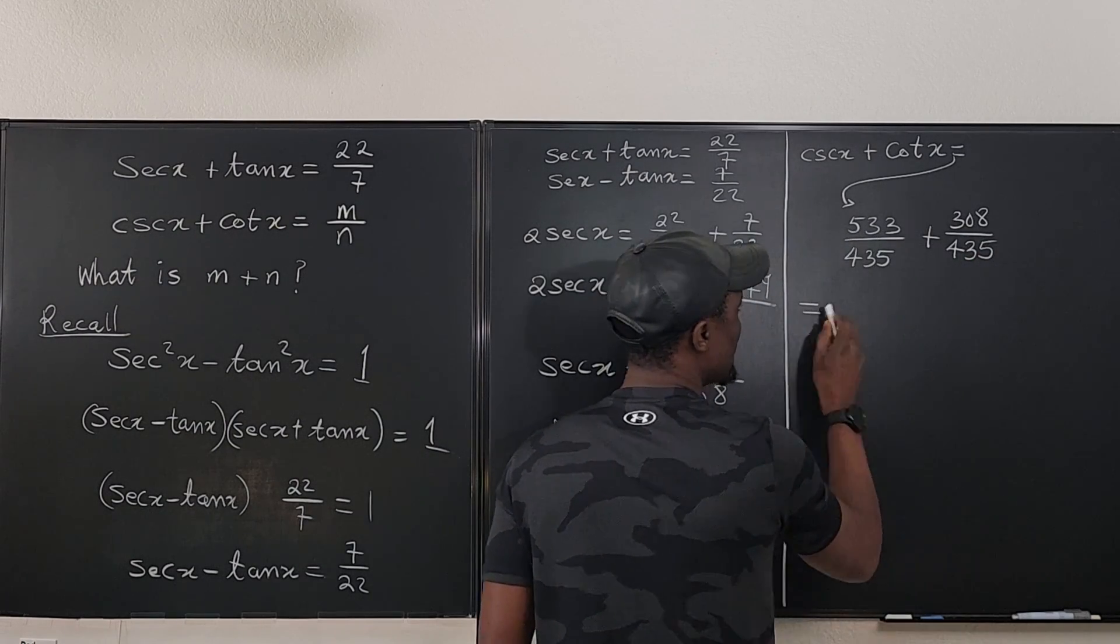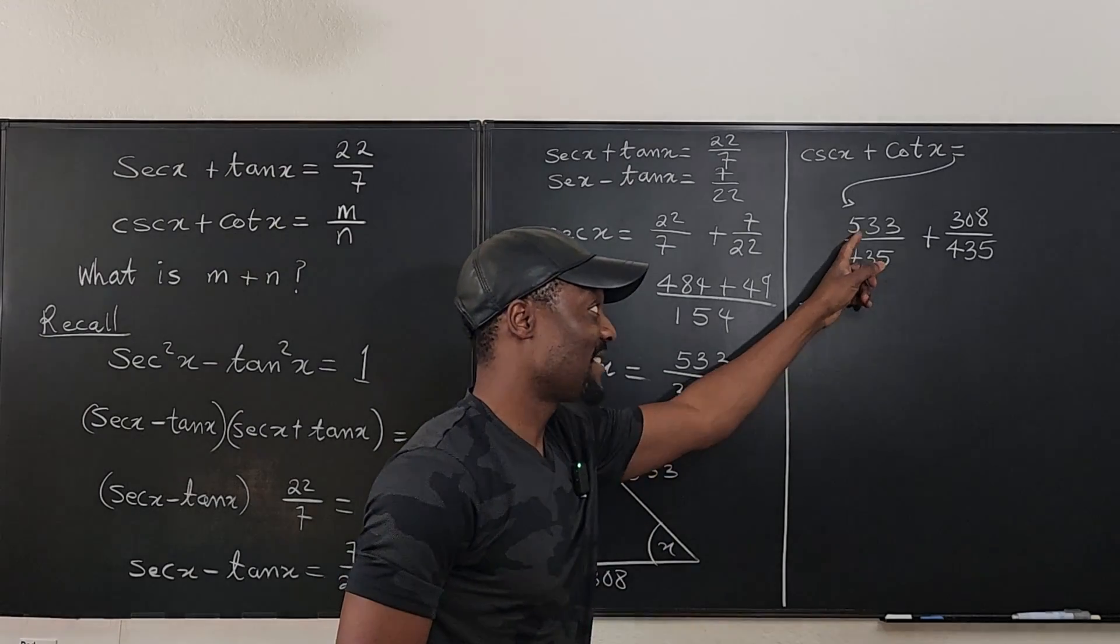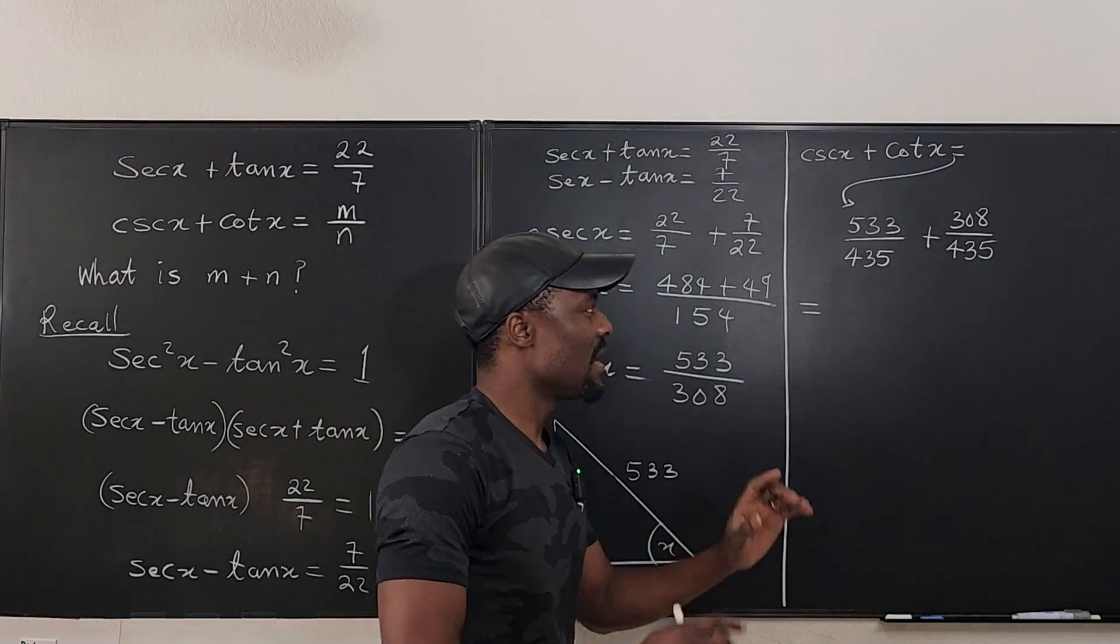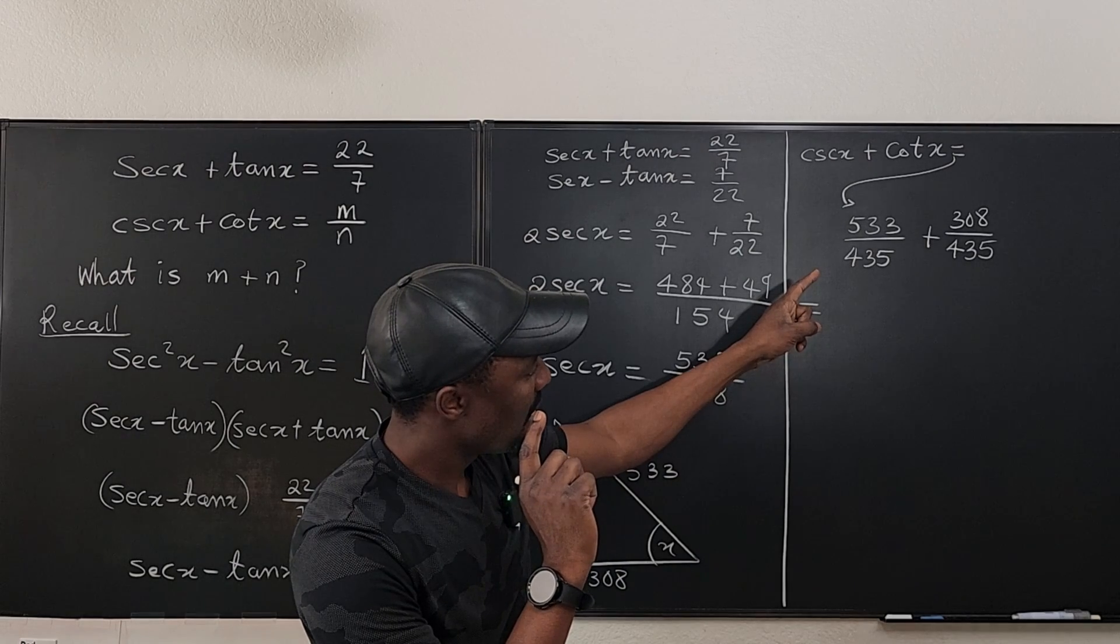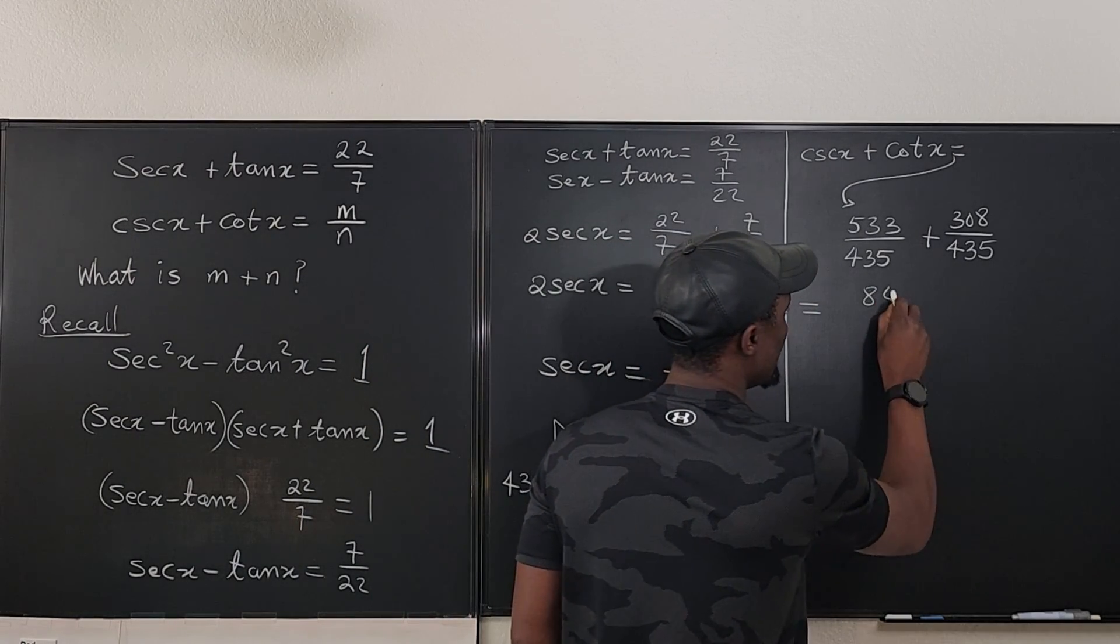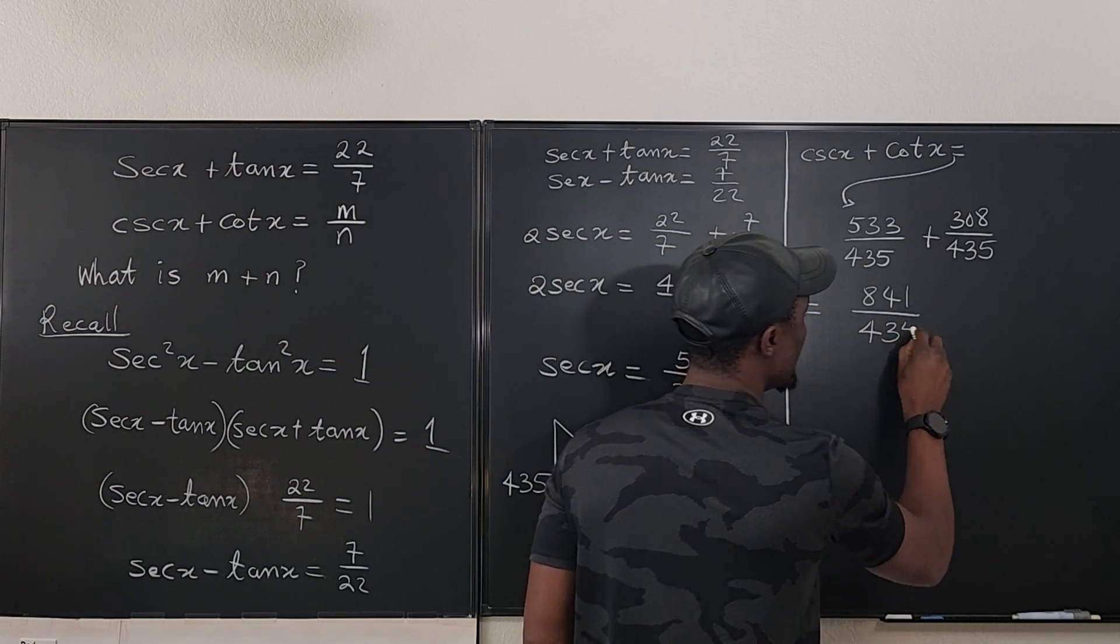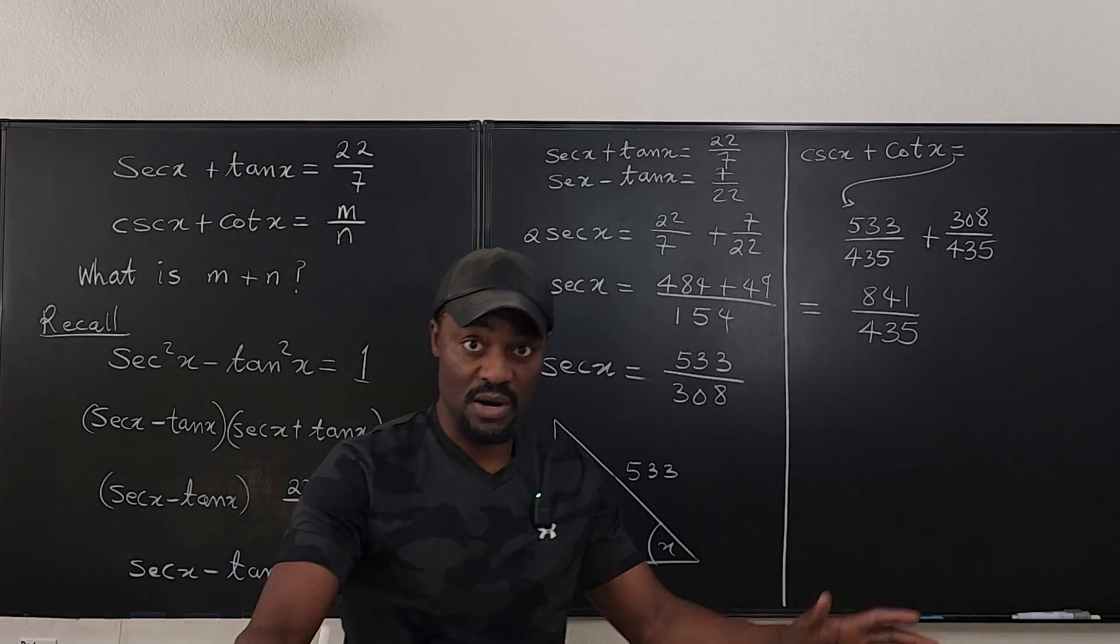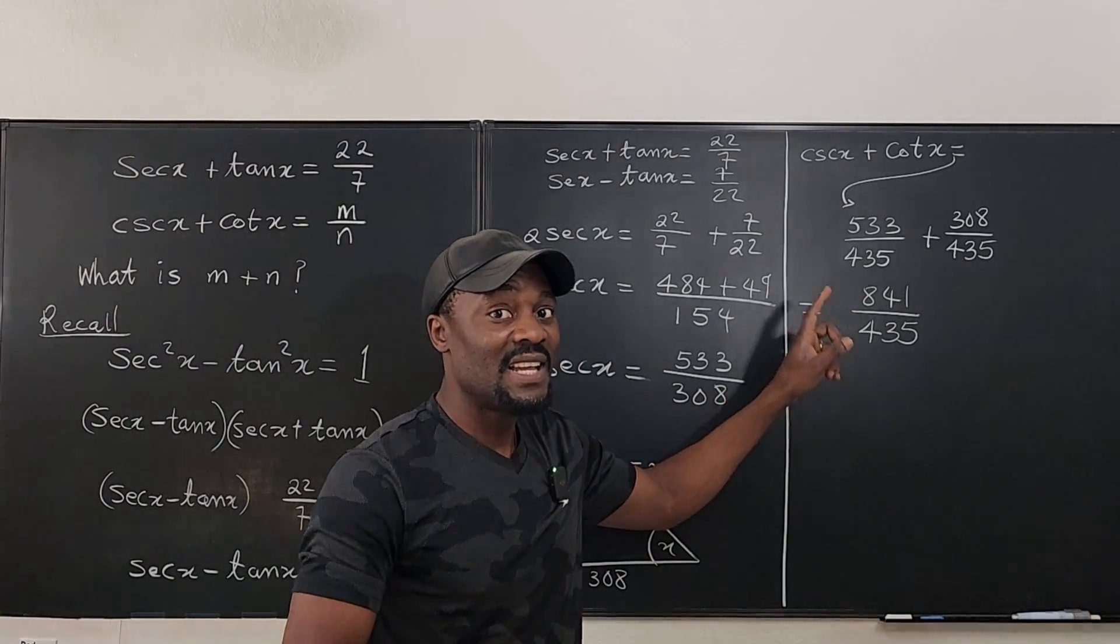What does that give us? Well, you see, they have a common denominator of 435. That means I'm just going to add these two together. That should give me 841. So this is 841 over 435. Now, is it smart to say that this is m and this is n? No.